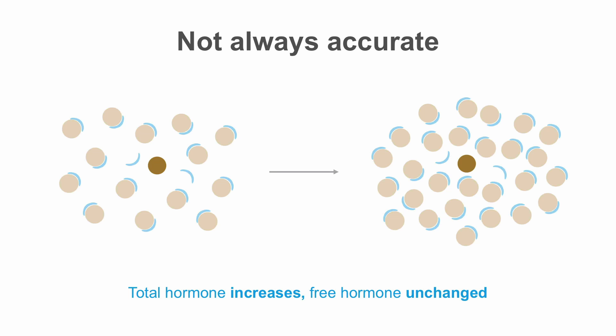While total thyroid hormone assays are usually a fairly good reflection of the amount of free or active thyroid hormone present in the circulation, there are some situations where they are not accurate. Sometimes the amount of bound thyroid hormone will be higher, but the amount of free thyroid hormone will remain the same. In that case, you would have an increase in your total thyroid hormone level, but your active thyroid hormone levels would remain unchanged. So total thyroid hormone assays are rarely used as standalone measurements of thyroid function.